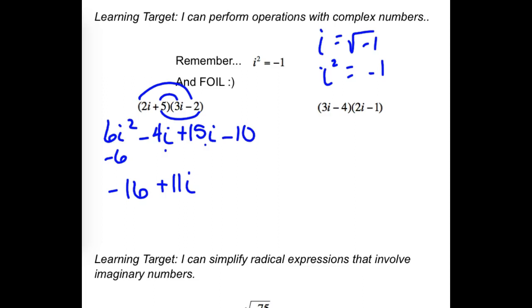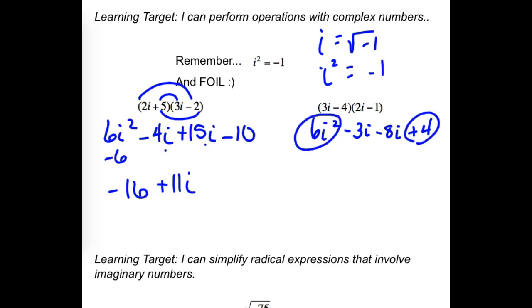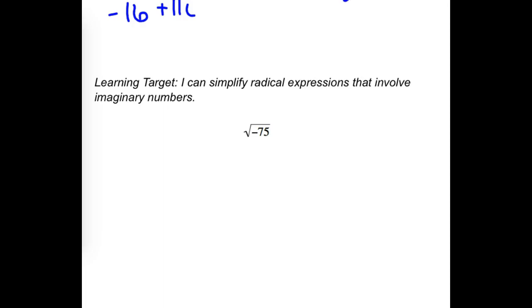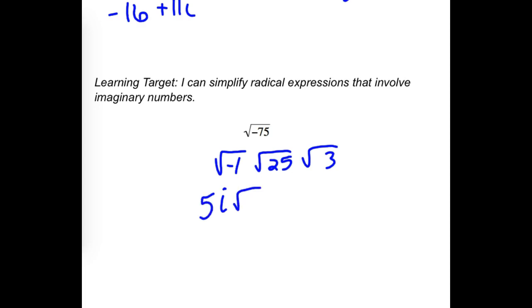Go ahead and do the next one. FOILing: you should have 6i² (which is −6). Outside gets negative 3i, inside gets negative 8i, last gets 4. Combining: −6 with 4 is −2; combining the i's gives −11i. For square root of negative 75: think of it as negative 1 times 25 times 3. The negative comes out as i, the 25 comes out as 5, and the √3 stays in — giving 5i√3.